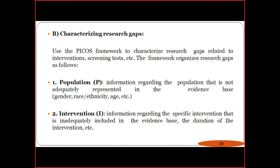The second part is characterization of research gaps using the framework. The first element is Population — information regarding the population not adequately presented in the evidence base. Some research requires survey reports collected from locally available people across all demographics: gender, race, age, and more. The second element is Intervention — information regarding a specific intervention inadequately included in the evidence base, such as the duration of the intervention.